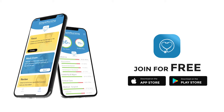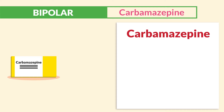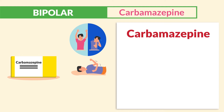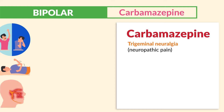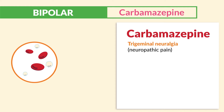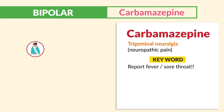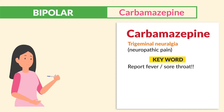Now for the bipolar medications, first on the list is carbamazepine. The indication is obviously bipolar, but it's also given for seizures, and a big one here is for treatment of trigeminal neuralgia — basically neuropathic pain. Now side effect number one is leukopenia. We have low WBCs, which means increased risk of massive infection. So the key word here is to report fever and sore throat — that's the most important.